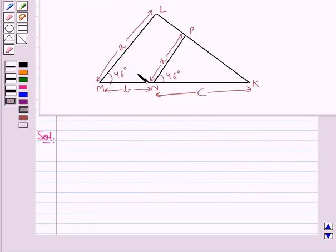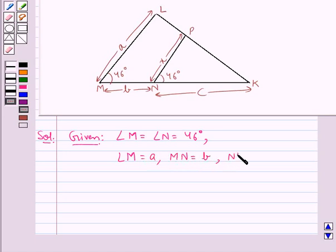Consider this figure. Let's see what all is given to us in this figure. Here, we have angle M is equal to angle N equal to 46 degrees, then LM is equal to a, MN is equal to b, and NK is equal to c and also PN is equal to x.